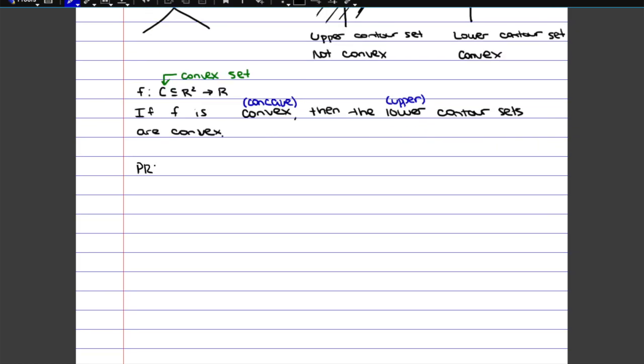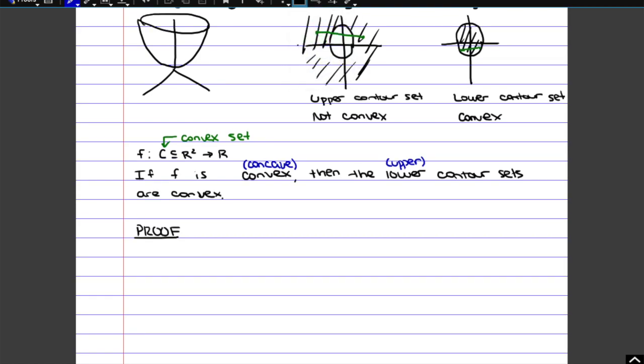So if we start off knowing that the function is convex, we can write out the definition of convex, which is essentially that if you draw a line between two points on your function, the points on the line, so the images, are always going to be greater or equal to the points on the function.